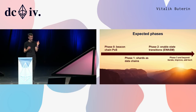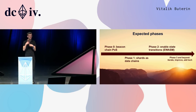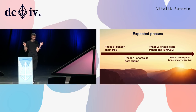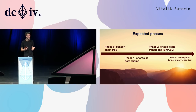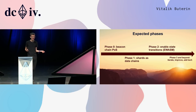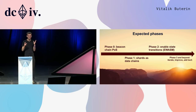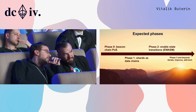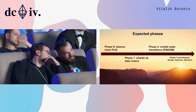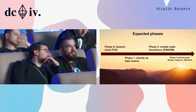Phase one is shards as data chains — a simplified version that doesn't do sharding of state, just sharding of data. You can throw data on the chain and build a state execution engine yourself, but the simplest use is data. If you want to do a decentralized Twitter on a blockchain, you'll now have the scalability to do it, though not yet the full state execution capability for smart contract applications.